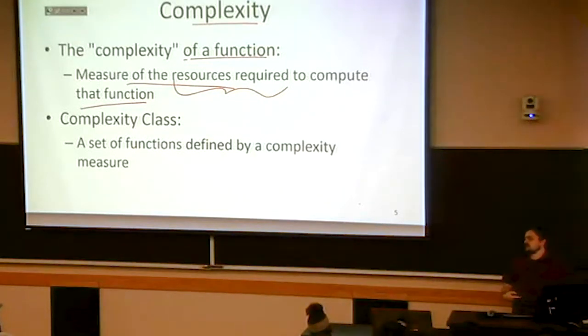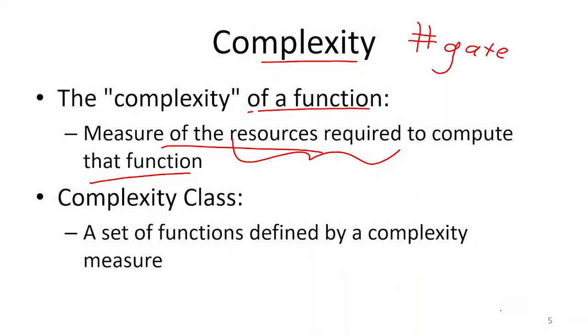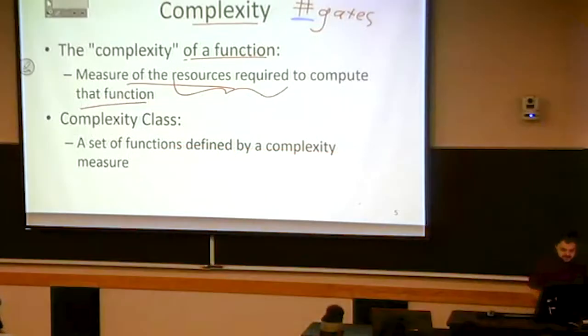For our NAND circuits, the measure of complexity that we're going to use is the number of gates. Functions that require more gates are going to be more complicated functions for this model of computing. In general, a trend that you're going to be seeing with regards to complexity is that whenever we're talking about complexity, we're always counting something. For other models of computing, we're going to be counting something, maybe not gates, but some other thing instead. The measure of the resources is always going to be a count of something.